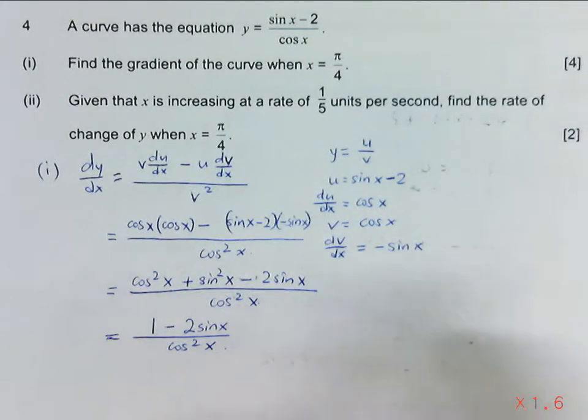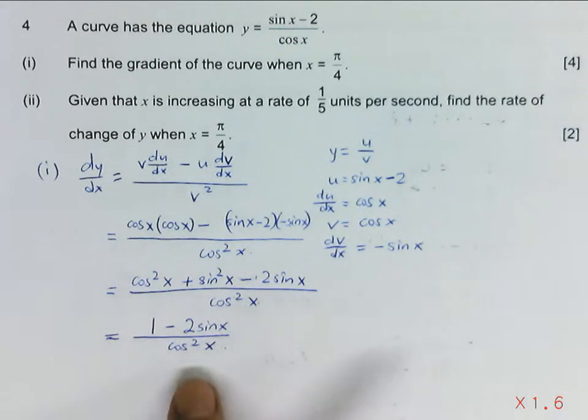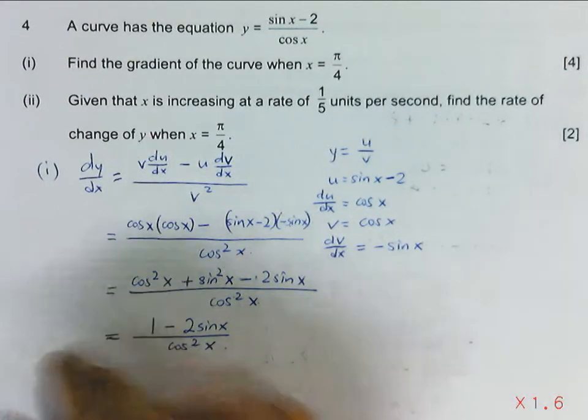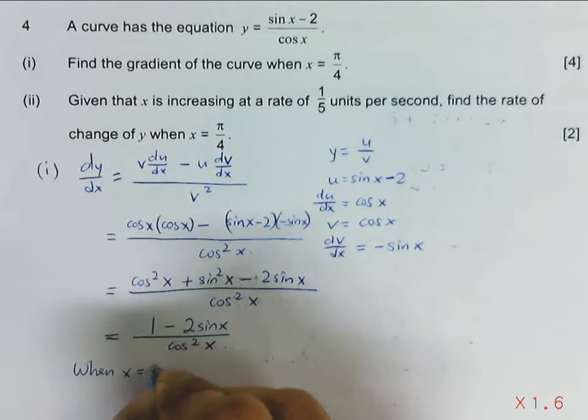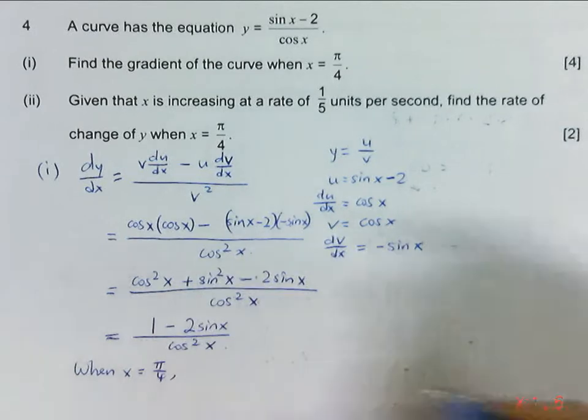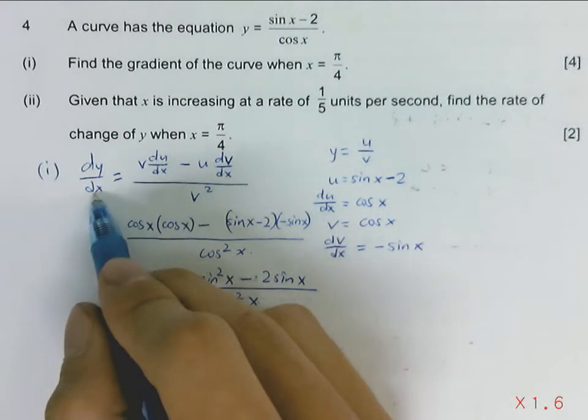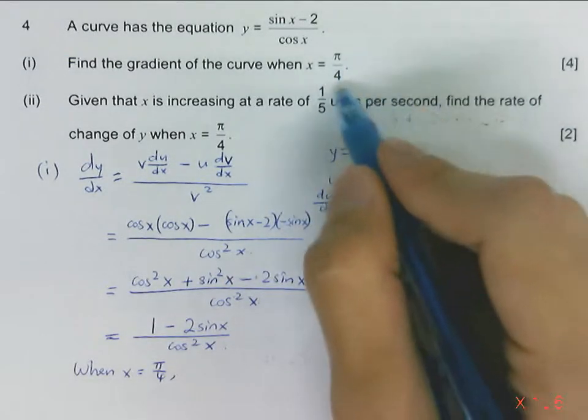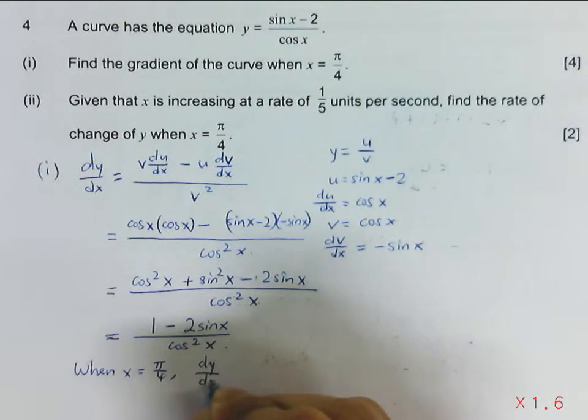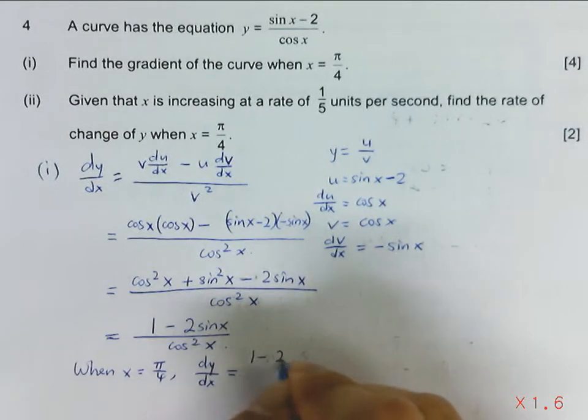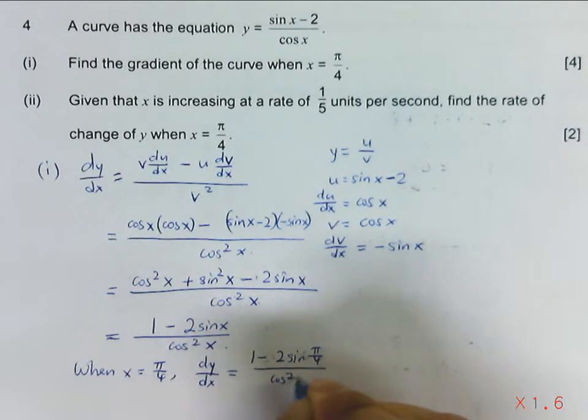Now notice they didn't ask us to express dy/dx further, so you do not need to use identities to manipulate or change this expression anymore. We will just substitute x into the gradient function. X equals π over 4. We can find the gradient of the graph at π over 4. So the gradient, which is dy/dx, will simply be 1 minus 2 sine π/4 over cosine squared π/4.